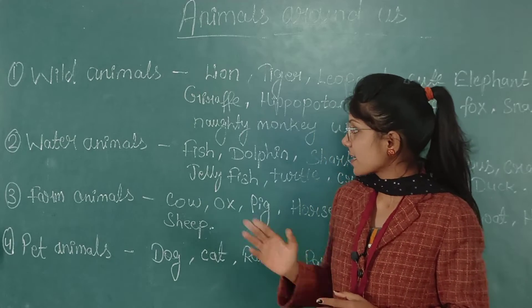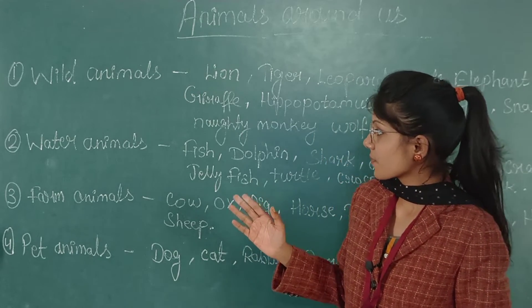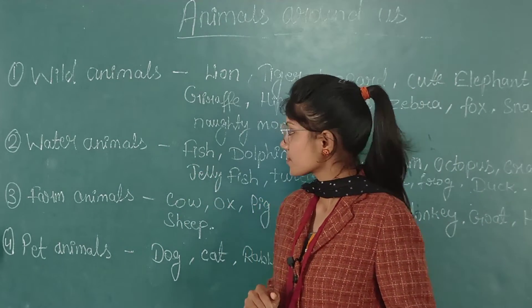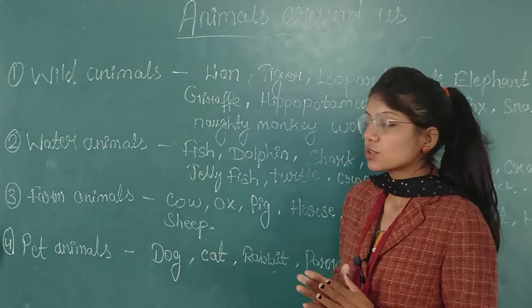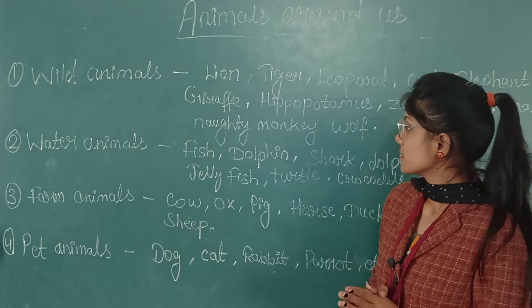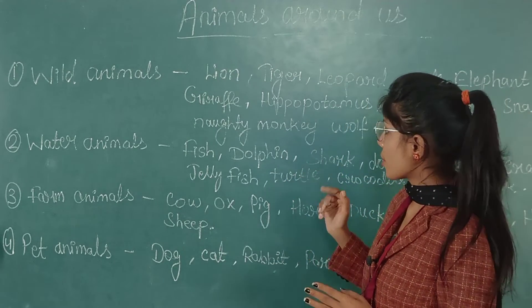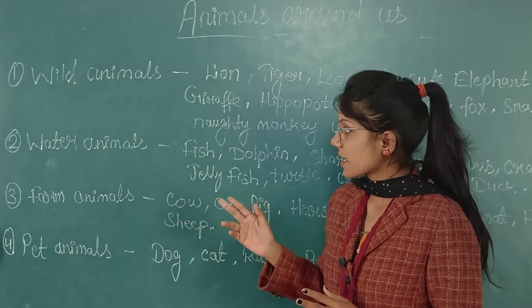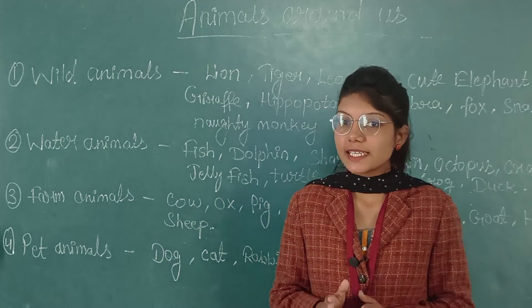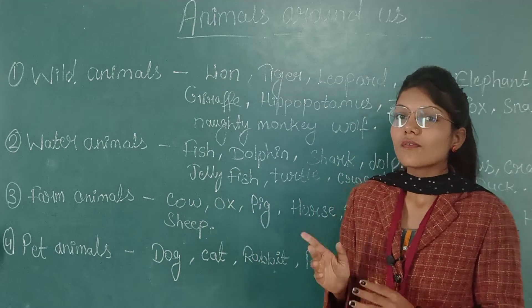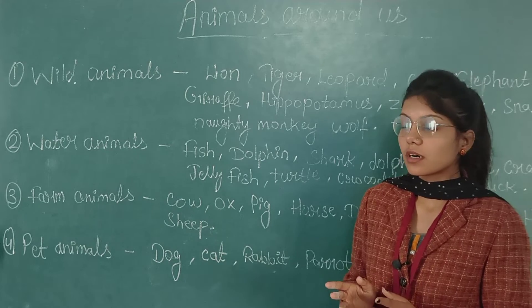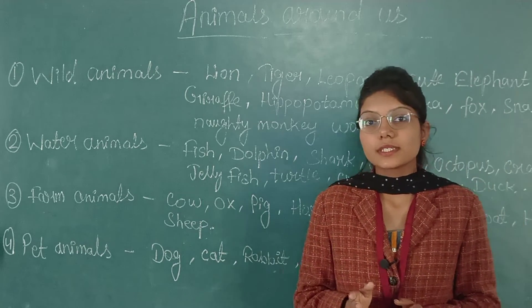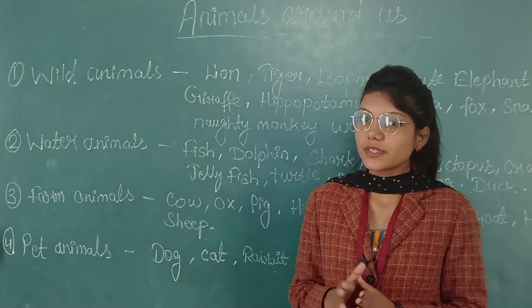Now the second one — we are discussing about water animals. So let's learn the names of water animals. Water animals are those animals which live in water. They are mostly found in oceans, seas, and rivers.